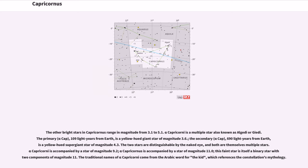Alpha Capricorni is a multiple star also known as Al-Gedi or Gedi. The primary, Alpha 2 Cap, 109 light-years from Earth, is a yellow-hued supergiant star of magnitude 3.6. The secondary, Alpha 1 Cap, 690 light-years from Earth, is a yellow-hued supergiant star of magnitude 4.3. The two stars are distinguishable by the naked eye, and both are themselves multiple stars.